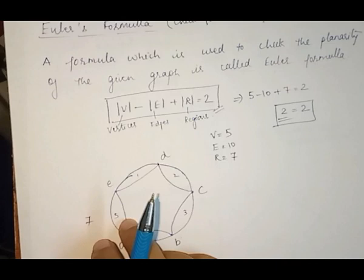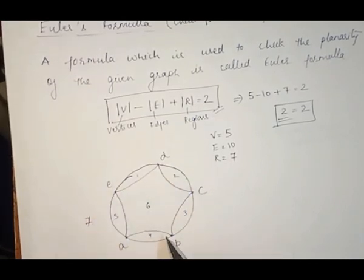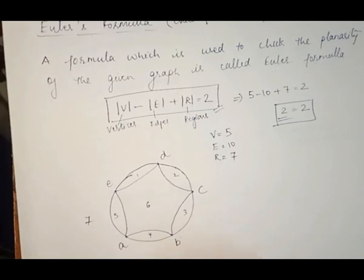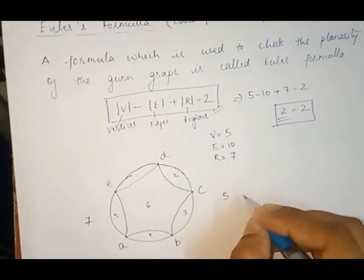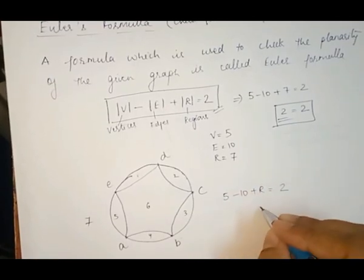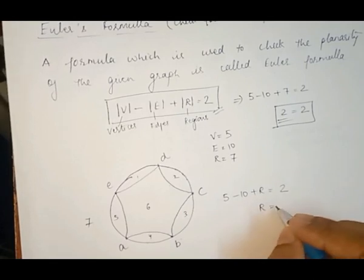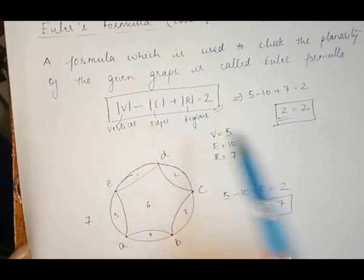By another means, suppose we have a graph and we have the count of vertices and edges, and we need to calculate the number of regions directly. Using Euler's formula: 5 minus 10 plus regions equals 2. Now we calculate the region value, which comes out to be 7. So we can use Euler's formula for finding the number of vertices, edges, or regions.